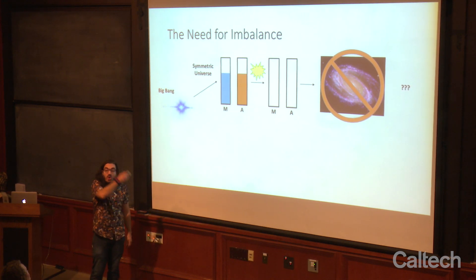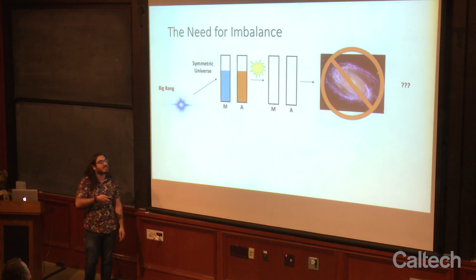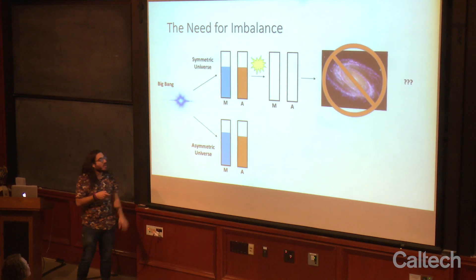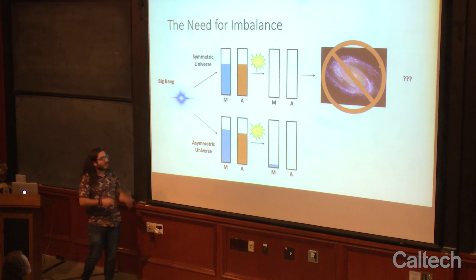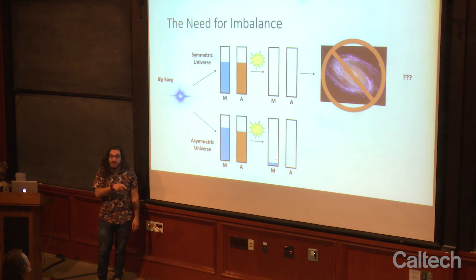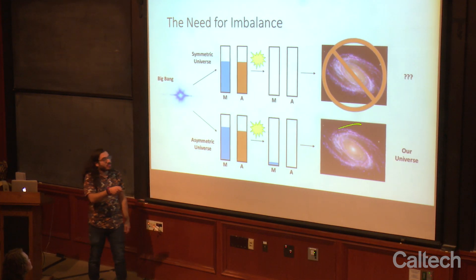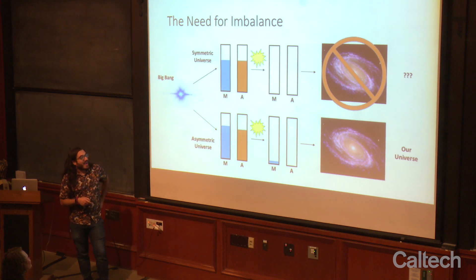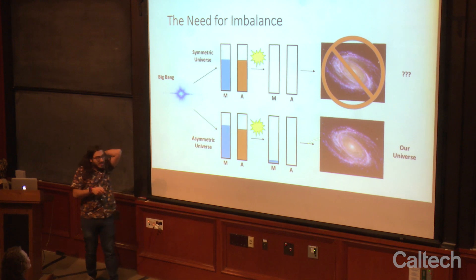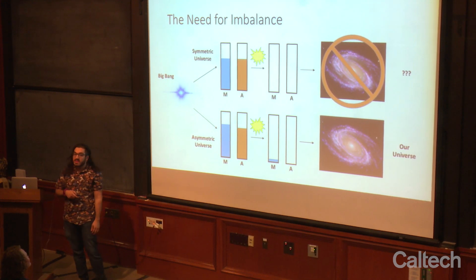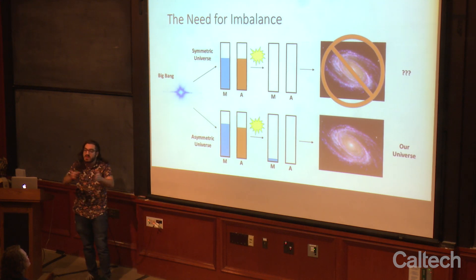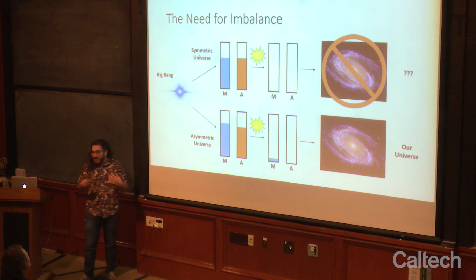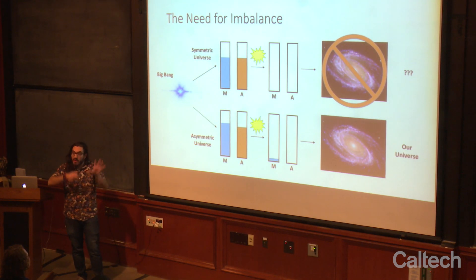The fact that we're here today and don't observe any anti-matter tells us there had to be an imbalance. In an asymmetric universe, you have more matter than anti-matter. When these two come together they cancel out, but there's a little bit of matter left — that little bit produced us. Eventually that little bit of matter goes on to produce galaxies, planets, solar systems, Earth, all these things. We can look at the amount of stuff in our universe and back out what this imbalance was. We think it was about one in a billion: for every billion anti-matter particles, there was a billion and one matter particles, and that one left over gave us our universe today.